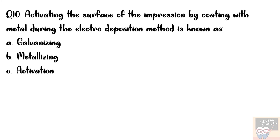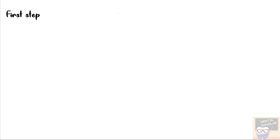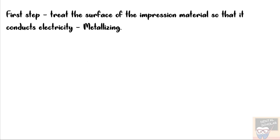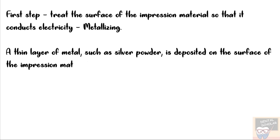The options also include activation and deposition. The correct answer is option B, metallizing. The first step in the electro deposition method is to treat the surface of the impression material so that it conducts electricity, and this process is called metallizing. In metallizing, a thin layer of metal such as silver powder is deposited on the surface of the impression material, and hence the impression becomes conductive.